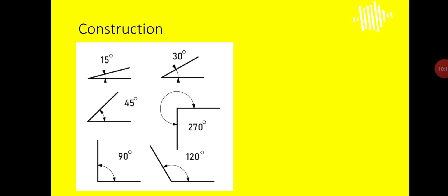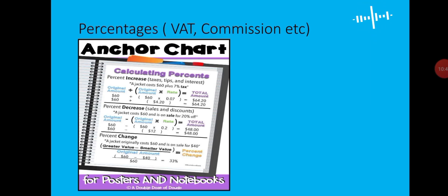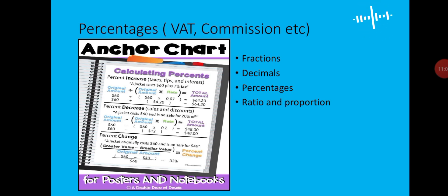For construction, it has to do with your math set — your compass and straight edge. You should be able to construct angles, and whatever is being communicated in the question, you must grasp it — everything you do below a statement you don't understand will not yield any marks. Then percentages: your VAT, commission, SNIT, selling price, and cost price — SNIT was also introduced in the new curriculum. You should be well abreast with fractions, decimals, percentages, and ratio and proportion. Word problem runs through everything and is only mastered through consistent practice.